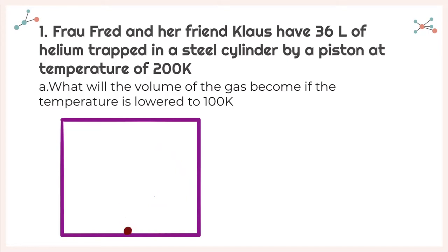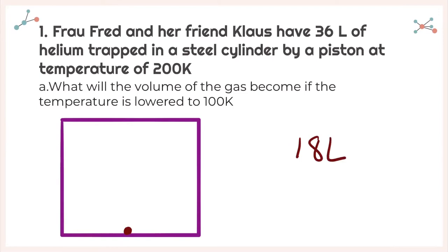Because there are less collisions, the volume we're going to be in doesn't have to be as big as the original. So we can say that if we lower our temperature by half, we can decrease the volume needed by half. So it would only take 18 liters. Let's keep these ideas for the next couple of problems.